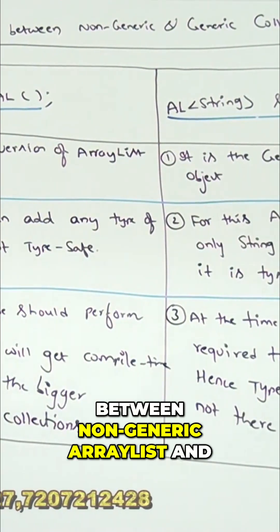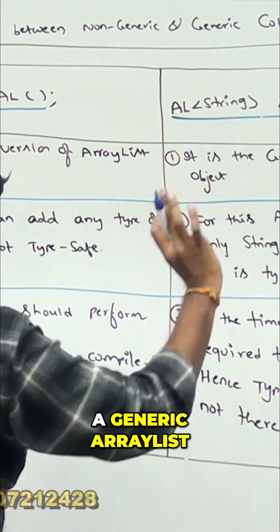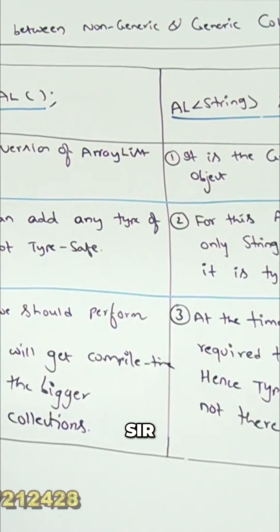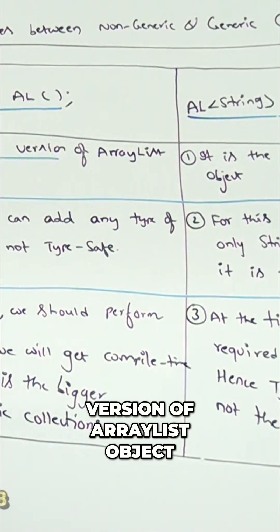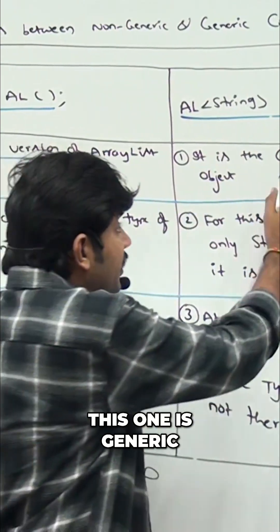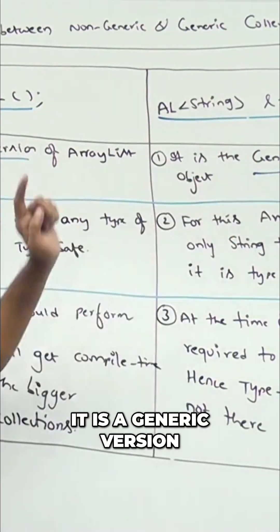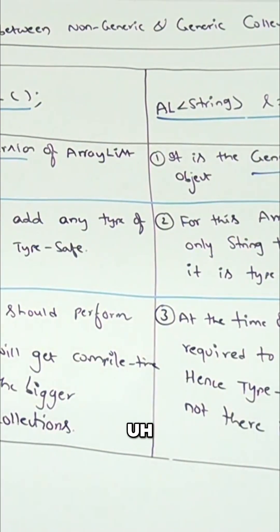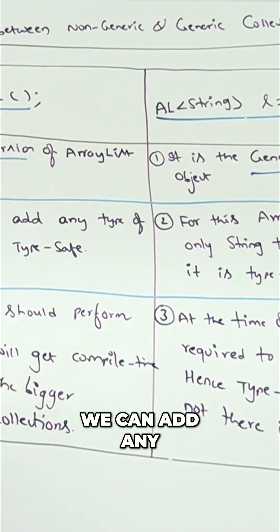What is the difference between a non-generic ArrayList and a generic ArrayList? Just observe — this is the non-generic version of an ArrayList object, and this one is obviously the generic version of an ArrayList object. This is the generic version.